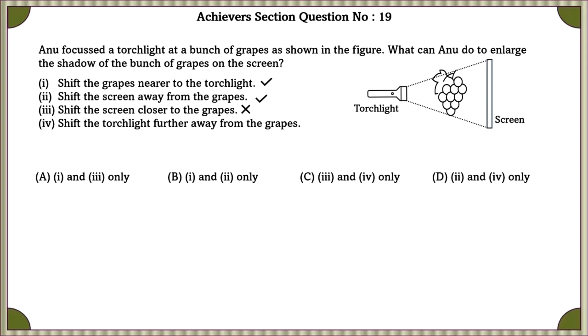Shift the screen closer to the grapes. Wrong. If you shift the screen closer, you will get a smaller image, not an enlarged image. Shift the torch further away from the grapes. This is also false. So, the correct option is 1 and 2.